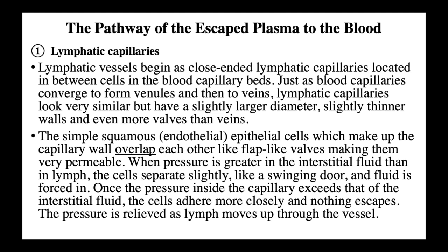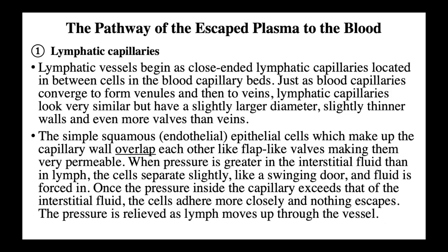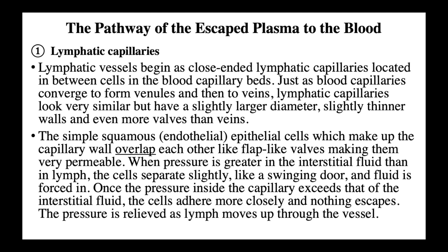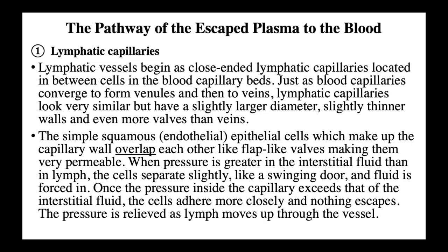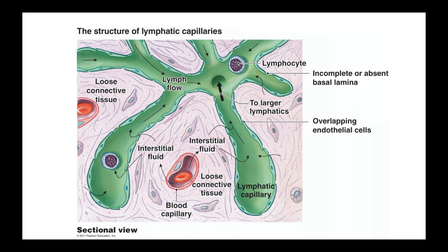Just as blood capillaries converge to form venules and then veins, lymphatic capillaries look very similar but have a slightly larger diameter, slightly thinner walls, and even more valves than veins. The simple squamous endothelial epithelial cells which make up the capillary wall overlap each other like flap-like valves, making them very permeable. When pressure is greater in the interstitial fluid than in the lymph capillaries, the cells separate slightly like a swinging door and fluid is forced in. Once pressure inside the capillary exceeds that of the interstitial fluid, the cells adhere more closely and nothing escapes. The lymphatic system is generally depicted in the color green.